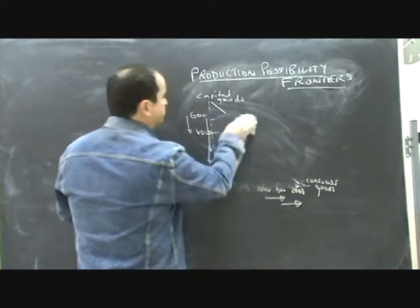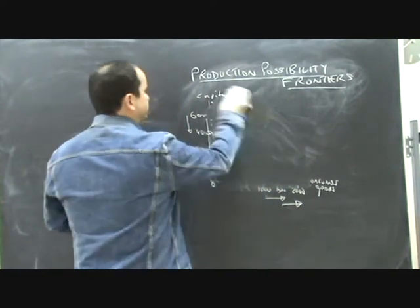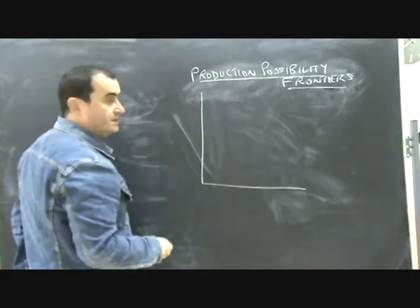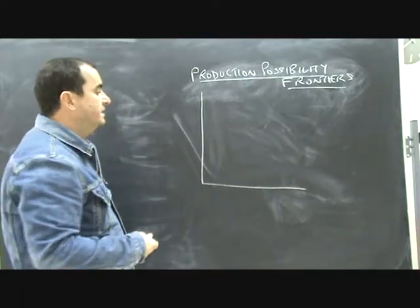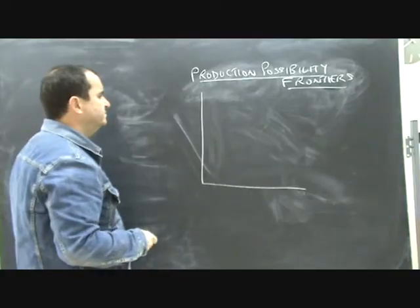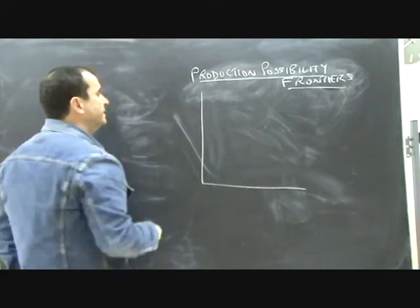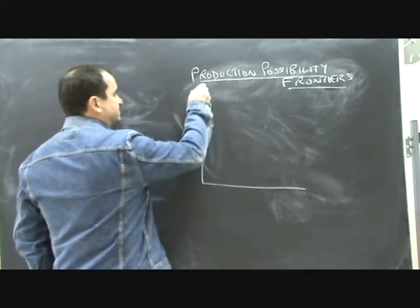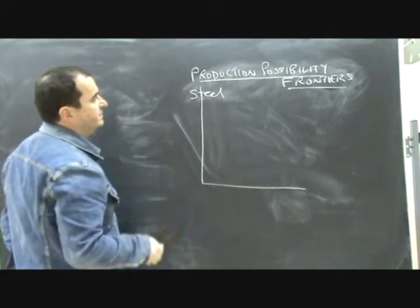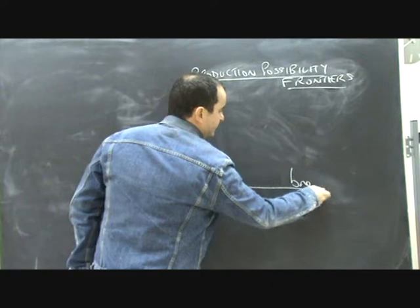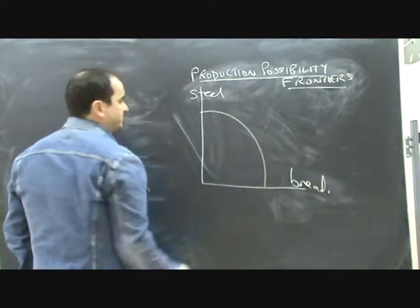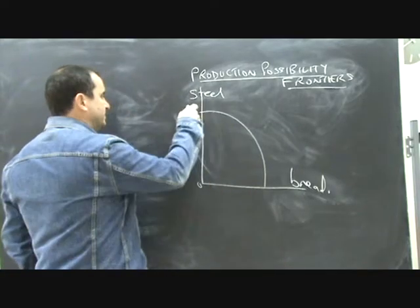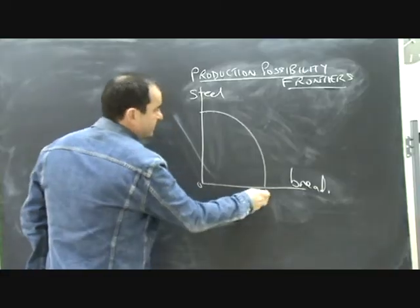Okay, just a couple more points to pick out on PPFs, and that is the idea that PPFs can shift. Now, PPFs will shift if there's a change in the availability of resources, if there's a change in the level of technology, either in a particular industry or in the entire economy. Let's change the equation slightly. Let's say that this is an economy that can only produce steel or bread. And let's work with this PPF. It's a curved PPF, it's realistic. And if, of course, they devote all their production to steel, they can make this much. If they produce only bread, they can produce this much.